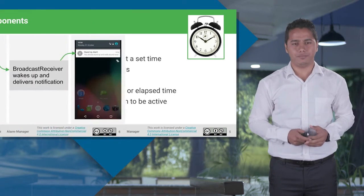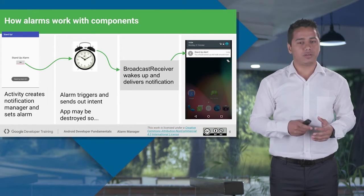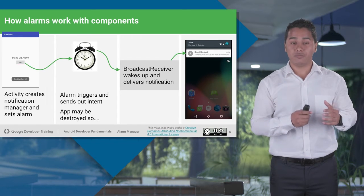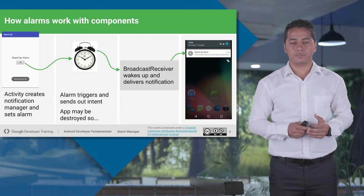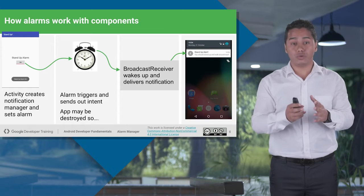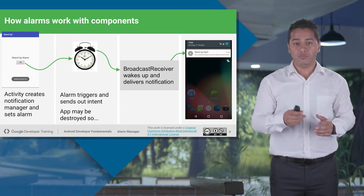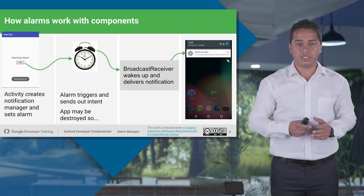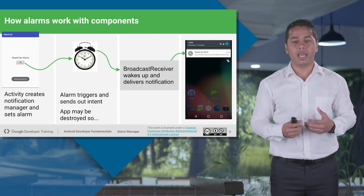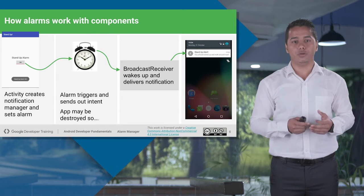Let's take an example. Let's say I have an application which tells me that I have to stand up after every 15 minutes. First of all, I will configure my alarm in my activity. My alarm will be triggering after 15 minutes. So now even if I close my application, my alarm is already set. After 15 minutes, my alarm will send a message. The correct broadcast receiver will get that message and it will give me the notification that I have to stand up. That's how you can use the alarm manager in your applications.